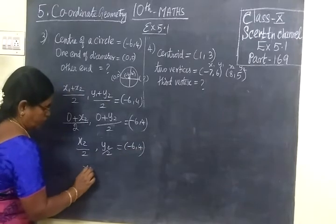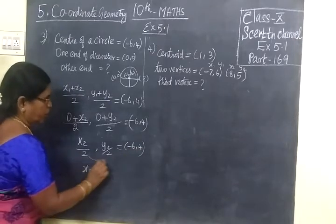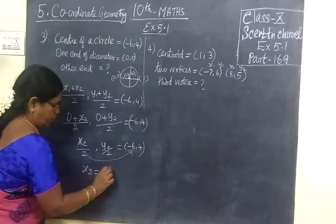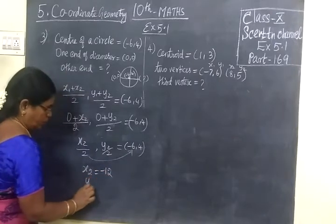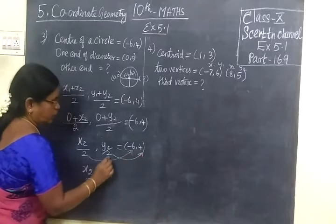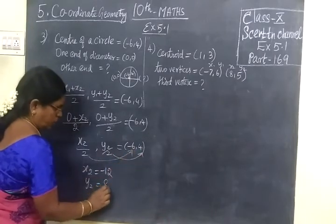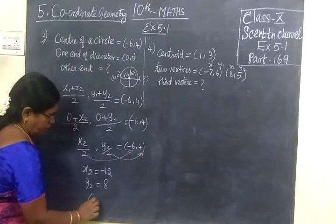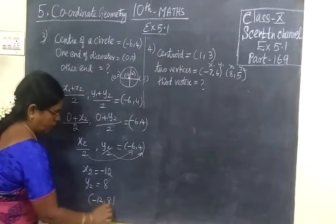So it implies x2 equal to, take 2 to this side, -12. Then y2 equal to, take 2 to the y coordinate, so 2 into 4 is 8. So the answer is (-12,8).